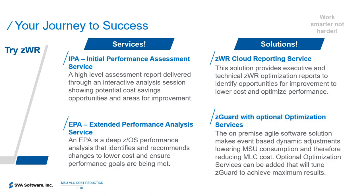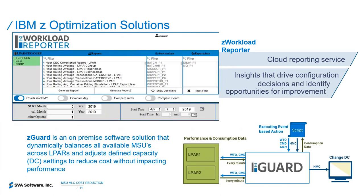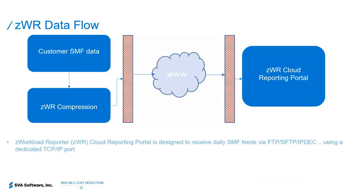In summary, we lead with services and exploit the software solutions. You can log in via the web and have your customer data available with over 600 reports — no need to install software on the mainframe itself. ZGUARD is an on-premise software solution that dynamically balances all available emissions across ALPAR and adjusts defined capacity settings to reduce cost without impacting performance. This typically happens after about a year, once customers are very familiar with the services offering and the ZWR capabilities.